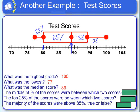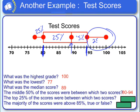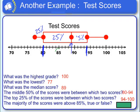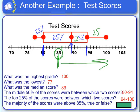The middle 50% of the scores were between which two scores? Remember, in a box and whisker, the box represents the middle 50%. So that would be between an 80 and a 94. The top 25% of the scores were between a 94 and a 100. The majority of the scores were above 85% — true or false? Well, 25% of the class scored here, 25% here — that's 50%, so it's over 50%. You could say the majority of the scores were above 85%. That's true.